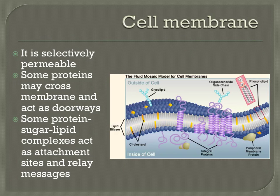Permeability means to pass through, and selective permeability means that some things can pass through and some things can't pass through the cell membrane. This selective permeability allows the cell to obtain materials that it needs while avoiding too much of materials it doesn't want. There are also gateways provided by proteins found within the cell membrane, which play an important role in transportation and cell communication.